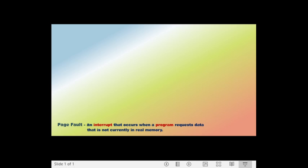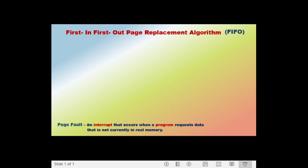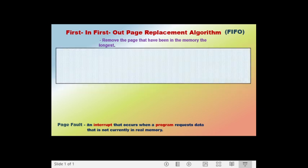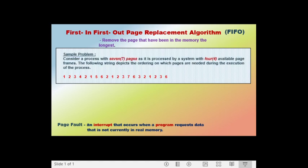We are going to apply the first type of page replacement algorithm, known as the First-In-First-Out (FIFO) page replacement algorithm, in our computation of page faults. The idea of FIFO is that we remove the page that has been in memory the longest. Here is our sample problem: consider a process with seven pages processed by a system with four available page frames. The following string depicts the ordering in which pages are needed during execution.